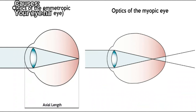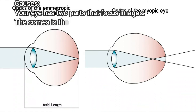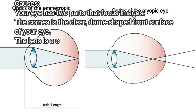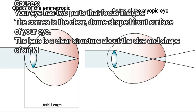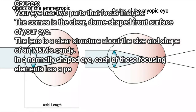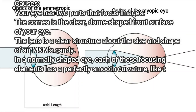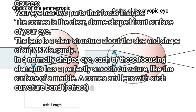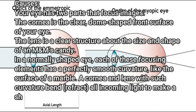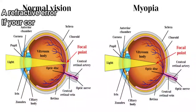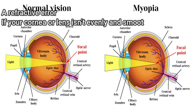Causes: Your eye has two parts that focus images. The cornea is the clear, dome-shaped front surface of your eye. The lens is a clear structure about the size and shape of an M&M's candy. In a normally shaped eye, each of these focusing elements has a perfectly smooth curvature, like the surface of a marble. A cornea and lens with such curvature bend (refract) all incoming light to make a sharply focused image directly on the retina at the back of your eye.